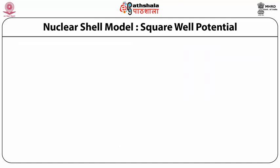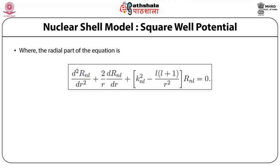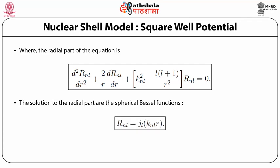Continuing the solution of the Schrödinger wave equation for the square well potential: the radial part of the equation is d²R_nl/dr² + (2/r)(dR_nl/dr) + [k_nl² − l(l+1)/r²]R_nl = 0. According to separation of variables, we have separated the variables, and this equation is the Schrödinger wave equation in terms of the radial wave function only. The solution of this radial part is R_nl = j_l(k_nl · r).